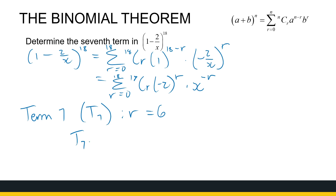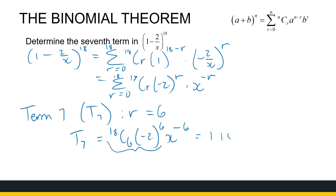So t7 equals 18C6 times (−2)^6 times x^(−6). Since (−2)^6 is positive, we get a positive number times x^(−6). That's a very big number — 1,188,696 x^(−6), or equivalently over x^6.